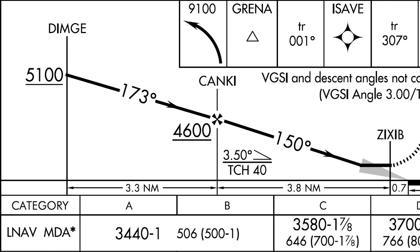For example, at 90 knots, we'll have about a 550 foot per minute descent to hold this steeper than usual 3.5 degree descent angle.